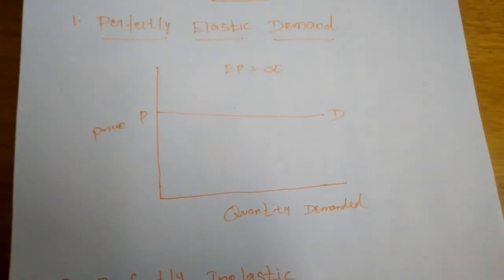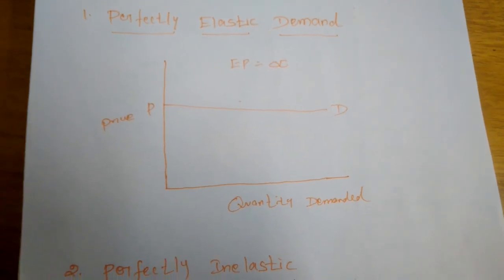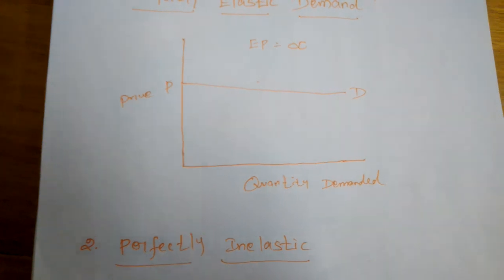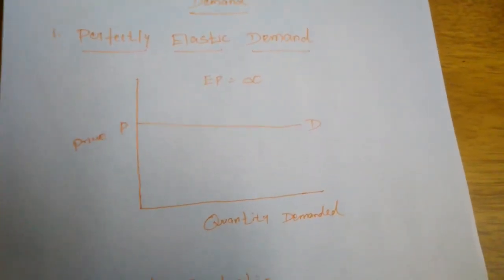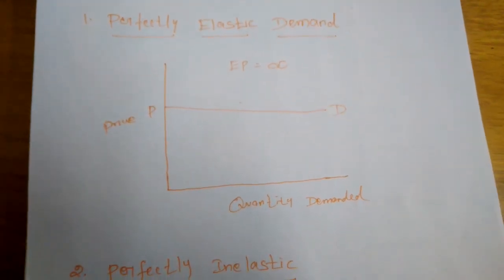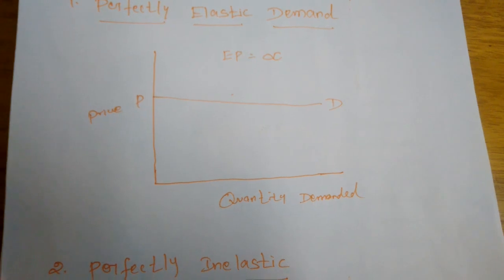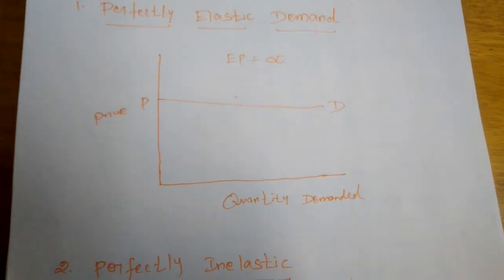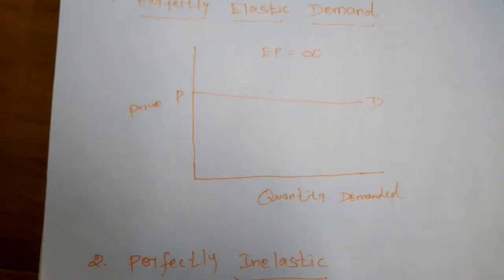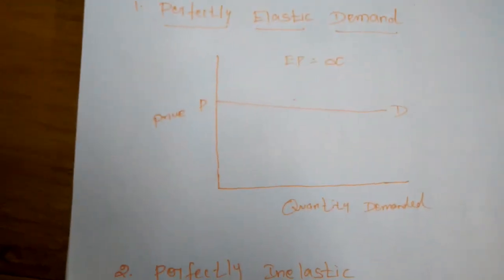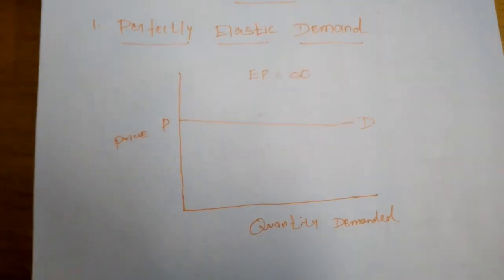When the price of a commodity changes, the quantity demanded also changes. Elasticity of demand tells us at what rate the quantity demanded changes based on the change in price. There are four types of elasticity of demand: price elasticity of demand, income elasticity of demand, cross elasticity of demand, and advertising elasticity of demand.